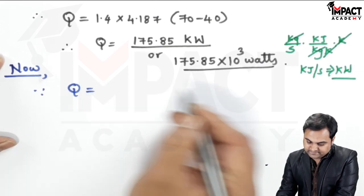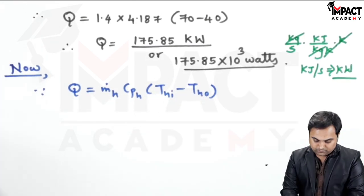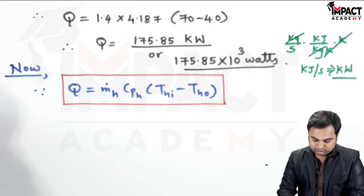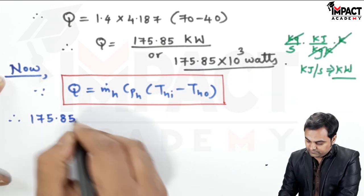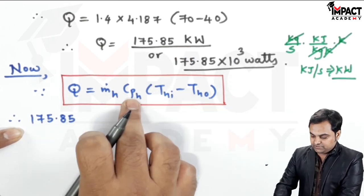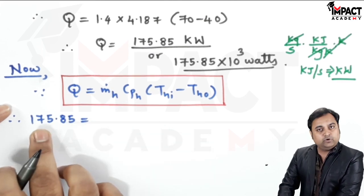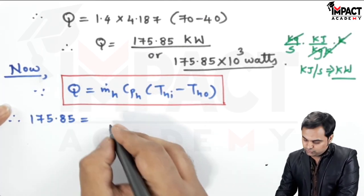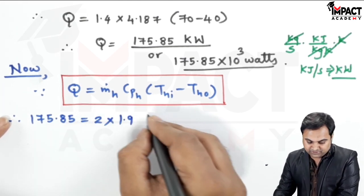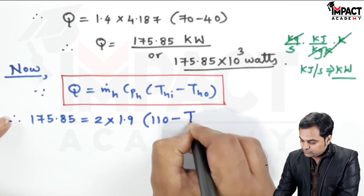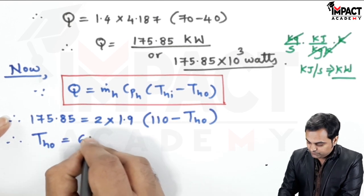Using the same equation for the hot fluid: Q = M_dot_H × CP_H × (THI − THO), so 175.85 kW = 2 × 1.9 × (110 − THO). Note that Q must be in kW when CP is in kJ/kg·K. Solving for THO gives THO = 63.72°C.